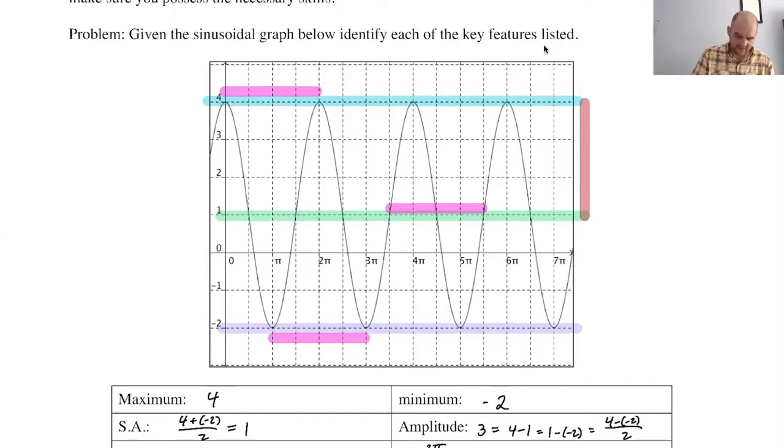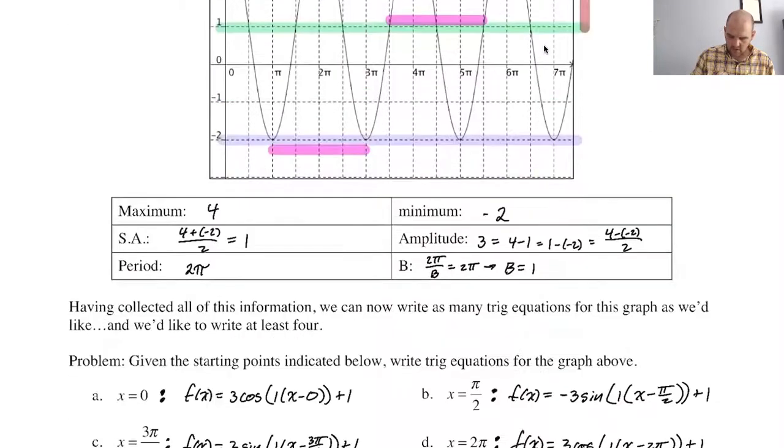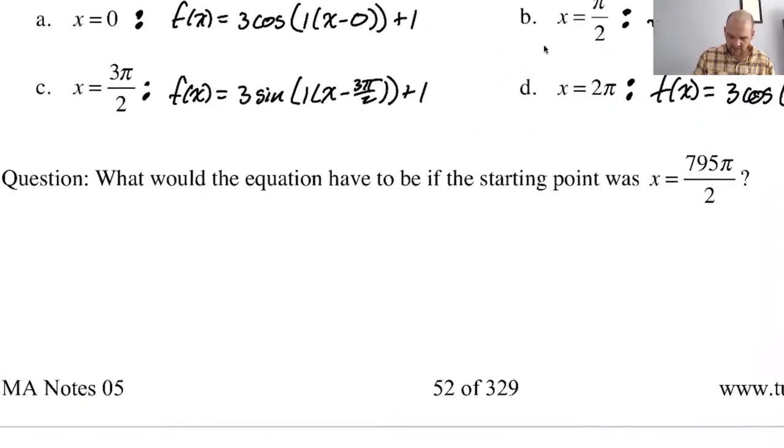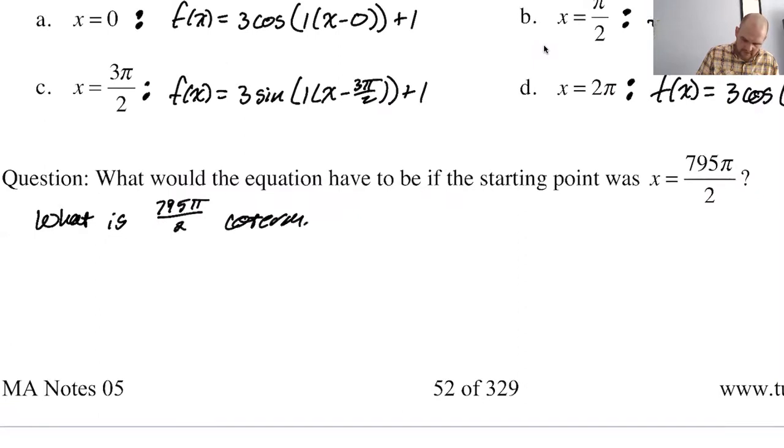So if I add the period, which is two pi to zero, I get this positive cosine again. If I add the period to pi over two, I end up here. I just get negative sine again. If I add the period to pi, I get three pi. I just get negative cosine again. This question that we're being asked is really what is 795 pi over two co-terminal to? What is 795 pi over two co-terminal to? If the period, so the period actually really matters here.